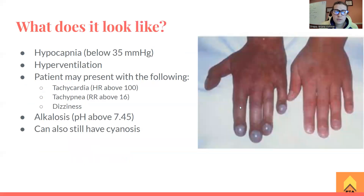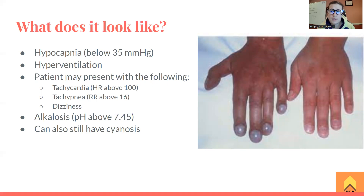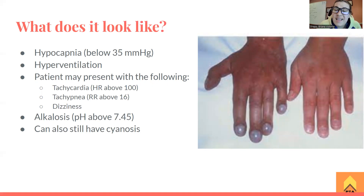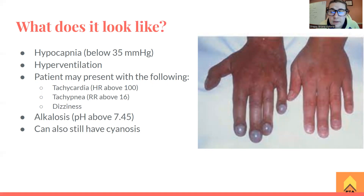So what does it look like? We're going to see cyanosis and clubbing of the digits — this is common with pretty much all respiratory conditions. If we're having an issue with perfusion of oxygen, we'll see hypocapnia — blood partial pressure of CO2 less than 35 millimeters of mercury. You'll be able to see these lab values from an arterial blood gas if you're in acute care. You're going to see hyperventilation — a respiratory rate above 20 respirations per minute, and in severe cases around 30 to 40.